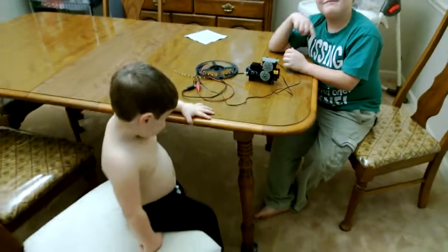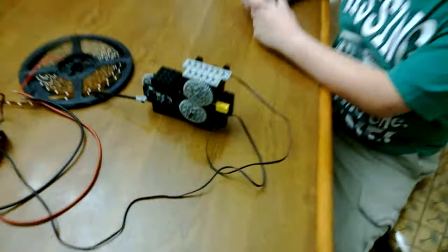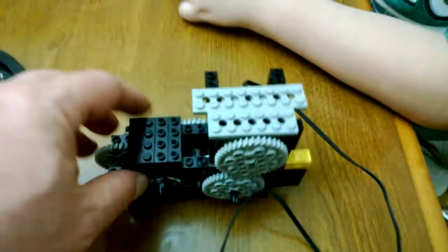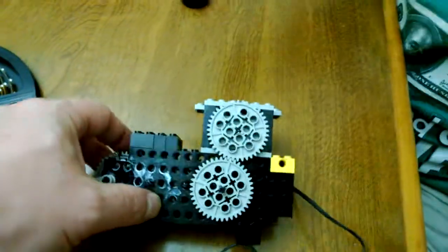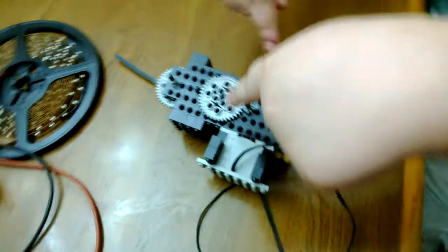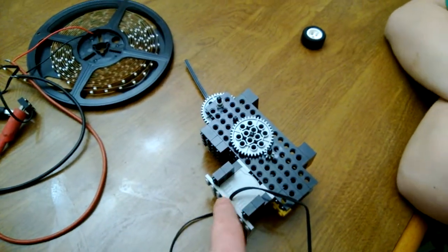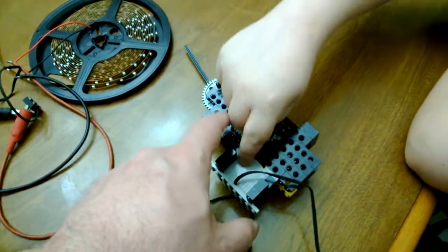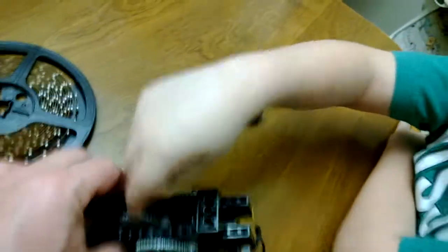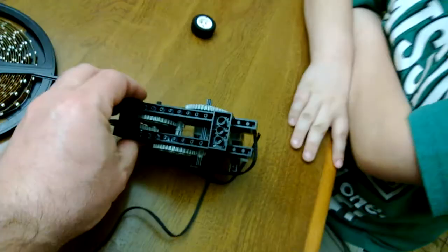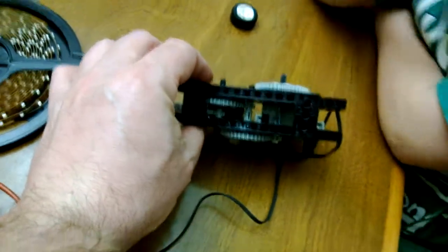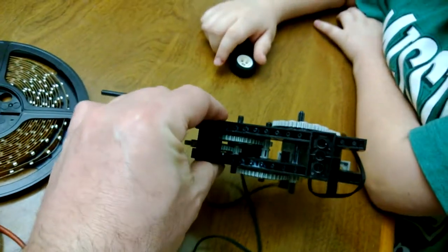So what we did was we built a generator using Lego parts. Here we have the basic generator and here we have some gears on this side, a motor, and some more gears on the outside, and then we have the gearbox itself on the inside.